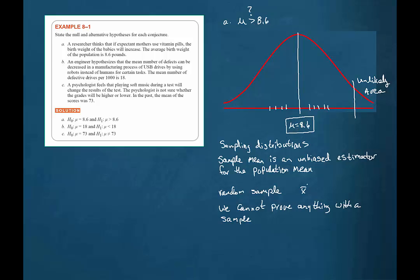Remember that what we're using is a sample. We're going to generate a sample and find the sample mean. If that sample mean lands way up here, then we would maybe be willing to conclude that the population mean is greater than 8.6. The null hypothesis is what we would reject if we land up here in this unlikely area, which we also call the rejection region.